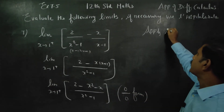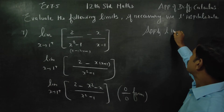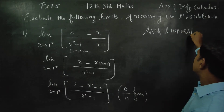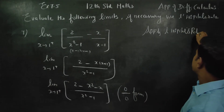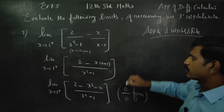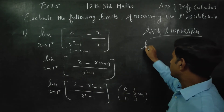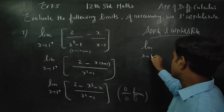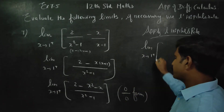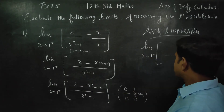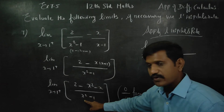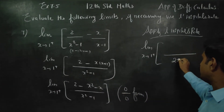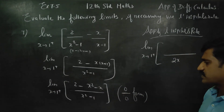Apply L'Hôpital's rule — L'Hôpital's rule is what we say. Limit x turns to 1 plus. Denominator x squared differentiate, we have 2x.